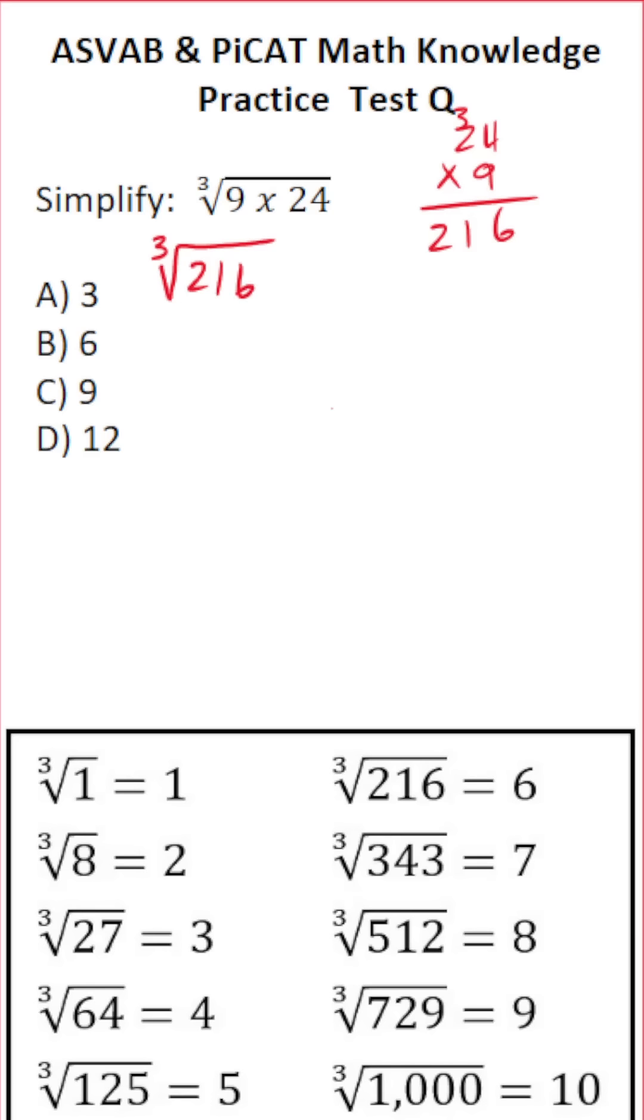Now for the ASVAB and PiCAT, I'd encourage you to memorize your cube roots of 1 to 10, because you can see that the cube root of 216 is simply 6.